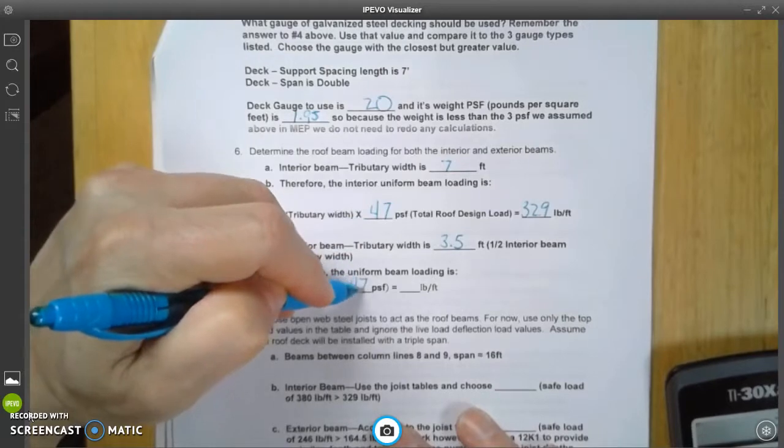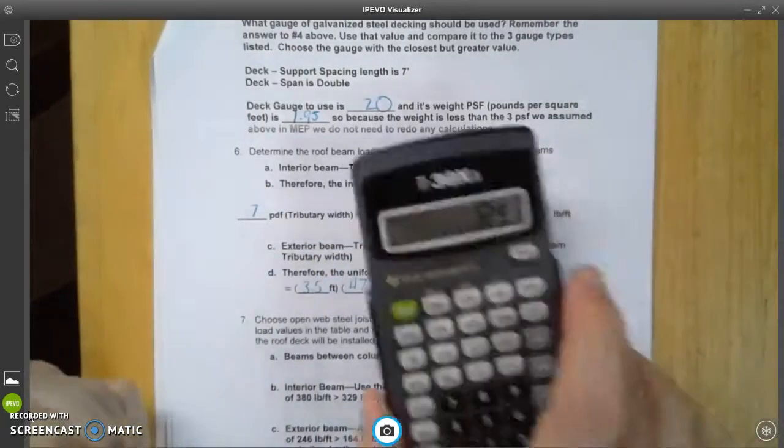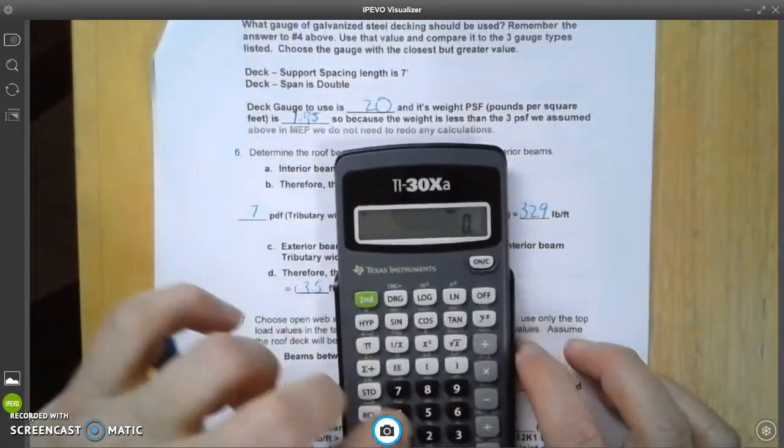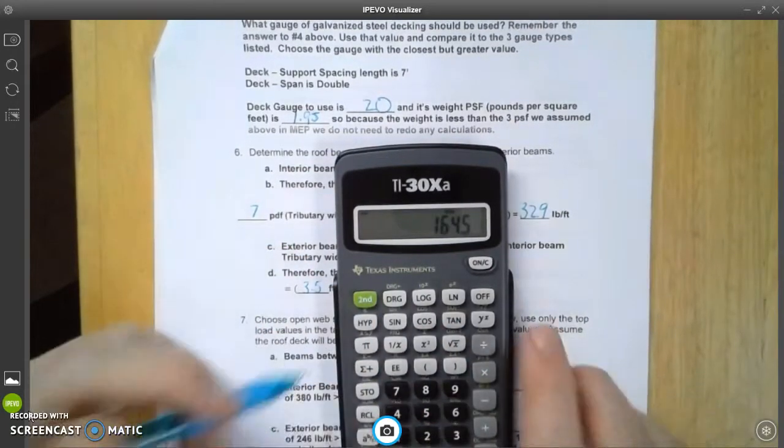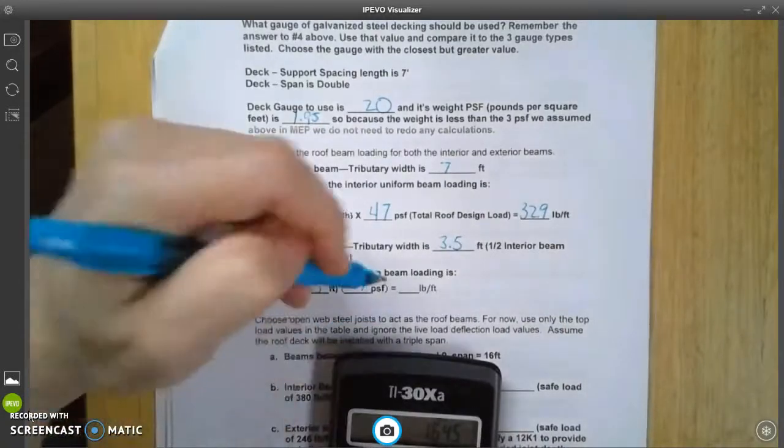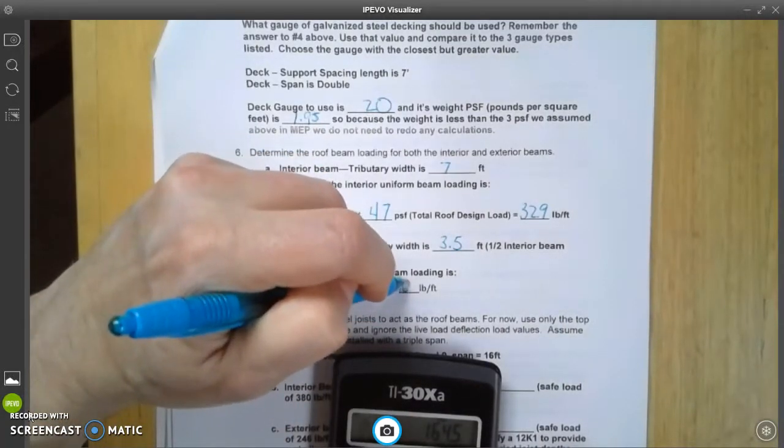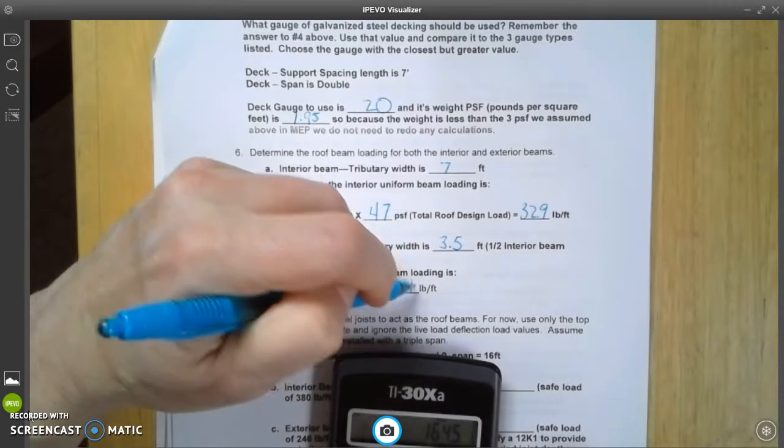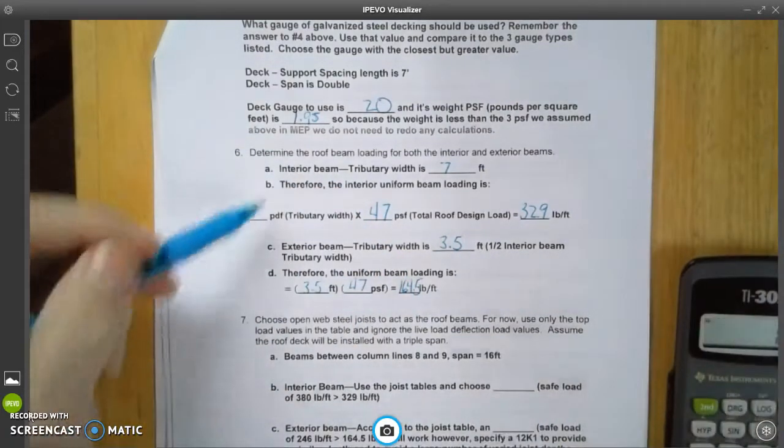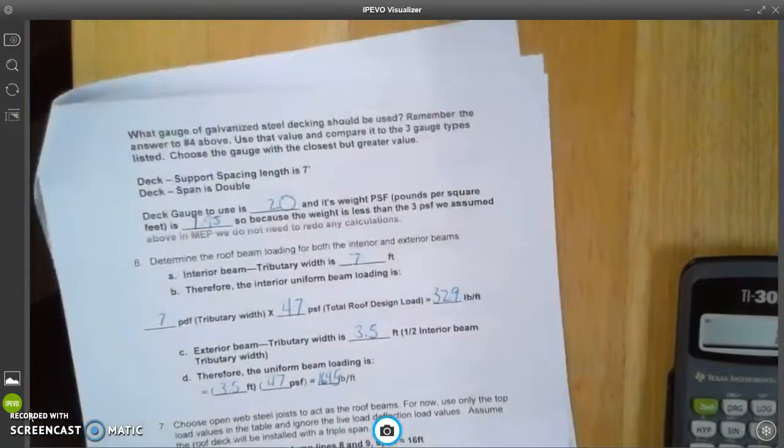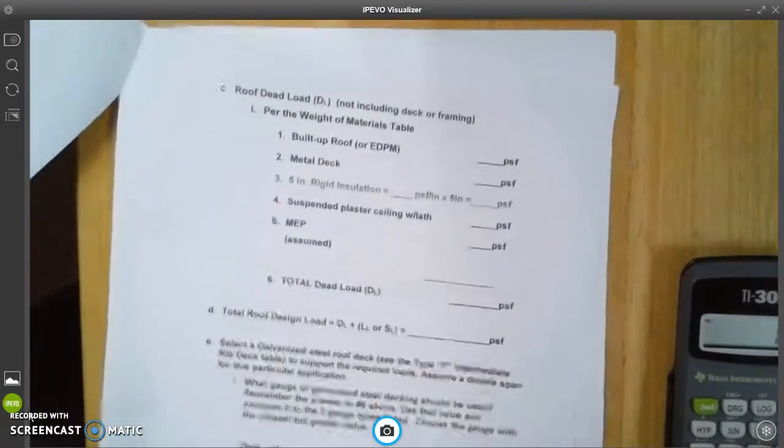multiply that. 3.5 times 47 equals 164.5. So that's how you do number 6 here on the number 8 problem.